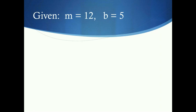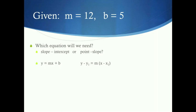Example 2 is very similar. We're given slope as 12 and y-intercept as 5. Again, we look and decide: slope and y-intercept, so we use slope-intercept form. We plug in and get y equals 12x plus 5 — an equation we can graph if needed.